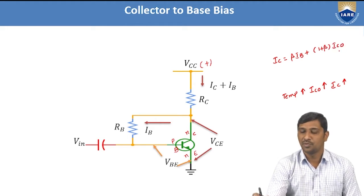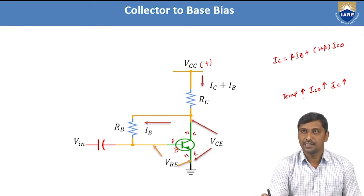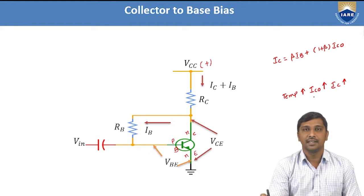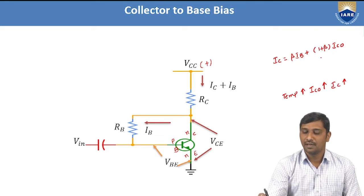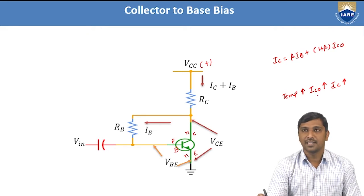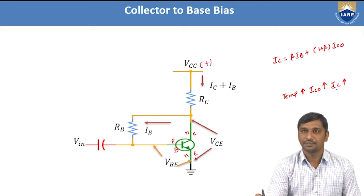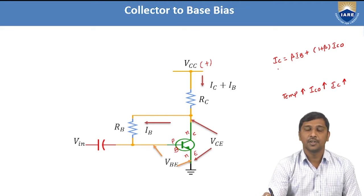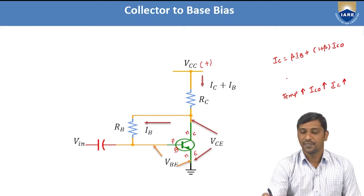According to semiconductor physics, for every 10 degrees centigrade increase in temperature, the reverse saturation current doubles. When temperature increases, the reverse saturation current increases, which also increases the collector current. If the collector current changes, the Q-point is no longer constant — it either triggers towards the saturation region or the cutoff region. Therefore, we need to compensate for this change in collector current.